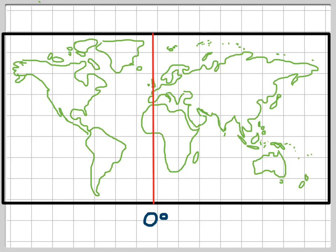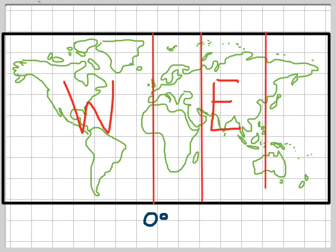The prime meridian divides the world into two hemispheres. We end up having an eastern hemisphere and a western hemisphere. And so all of these lines of longitude to the east of the prime meridian are in the eastern hemisphere. They're given numbers with an E after them for east.